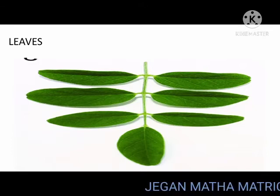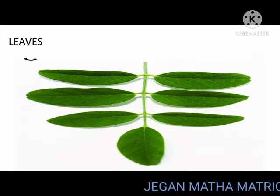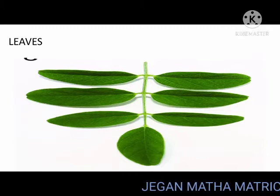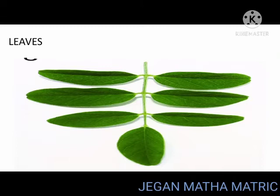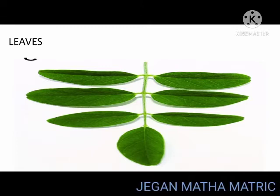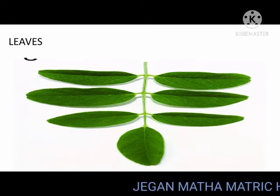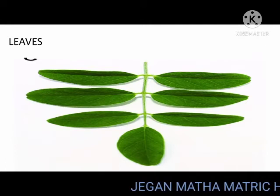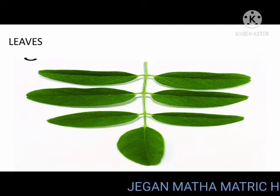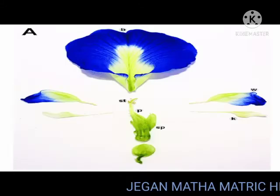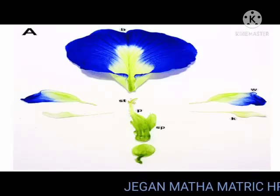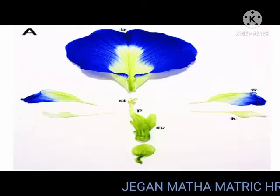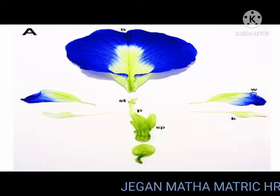Showing reticulate venation. Petioles are present, so it is called petiolate. Stipules are pulvinated — pulvinated means it is slightly bulged at the base. Inflorescence: it is solitary and axillary.